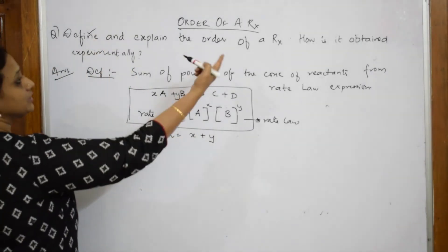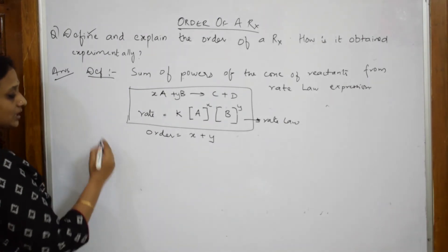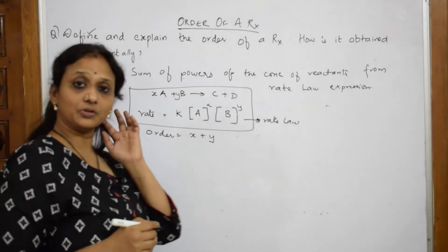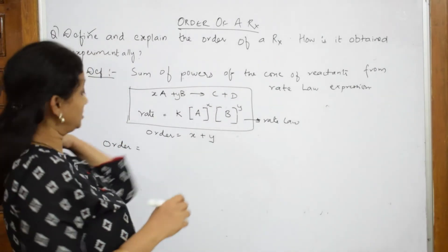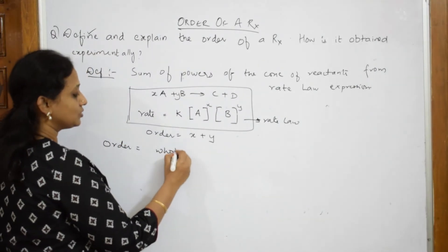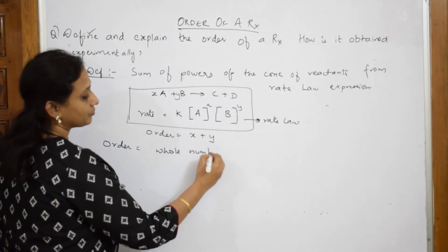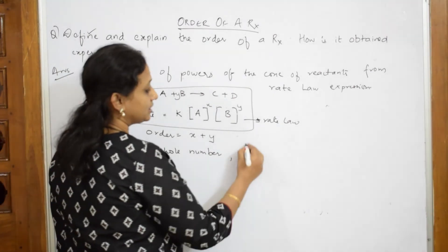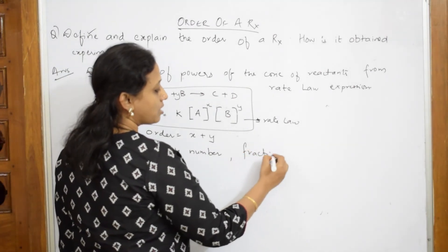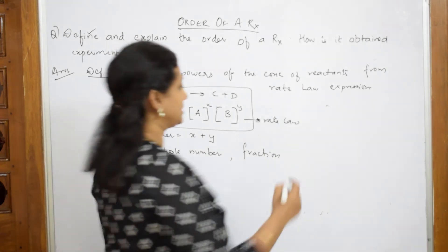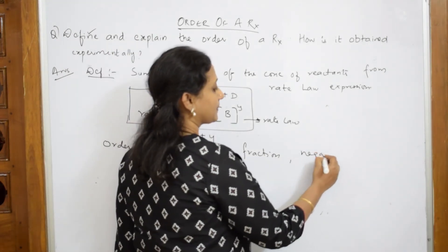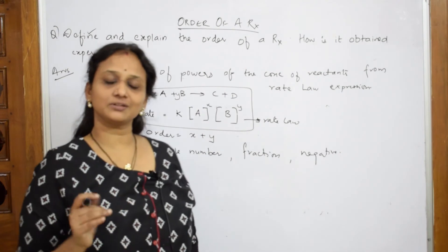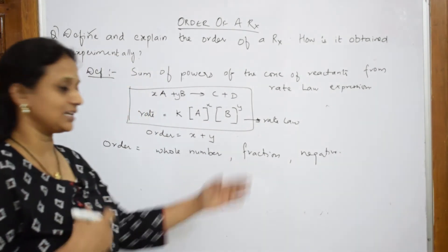Whenever I speak about order of a reaction, the values for order can be whole numbers, the answer can also be a fraction, and the answer can also be a negative. So in order, you will get an answer in any of these forms.